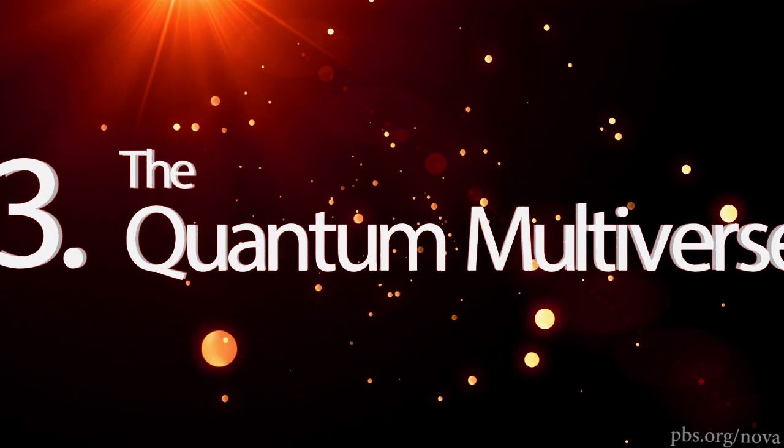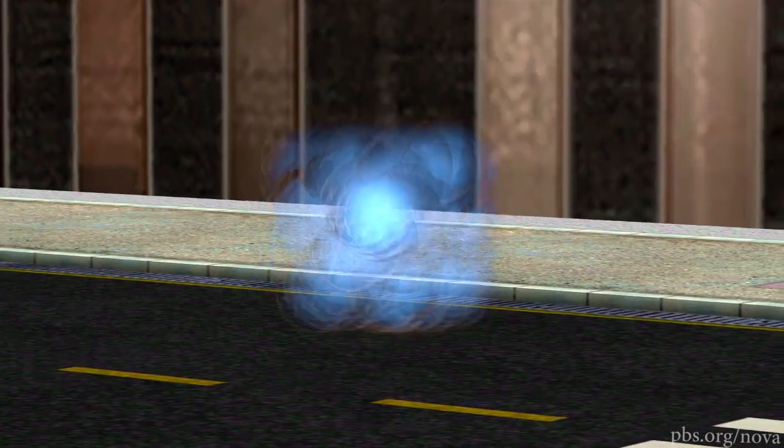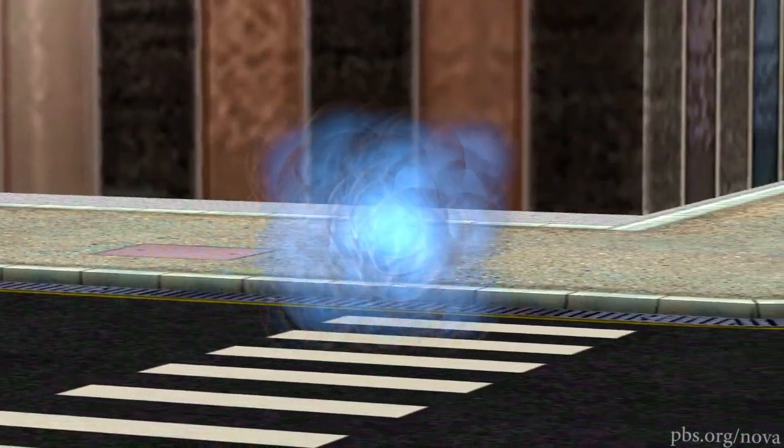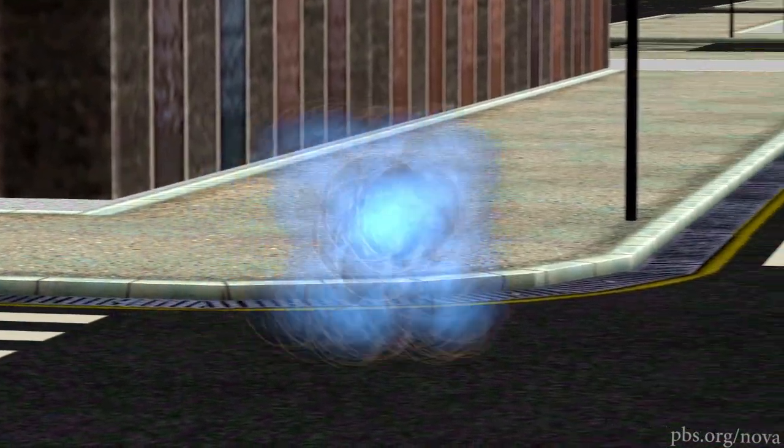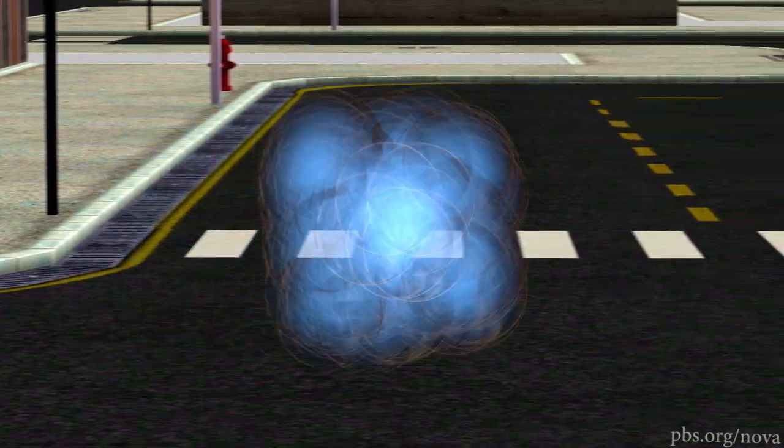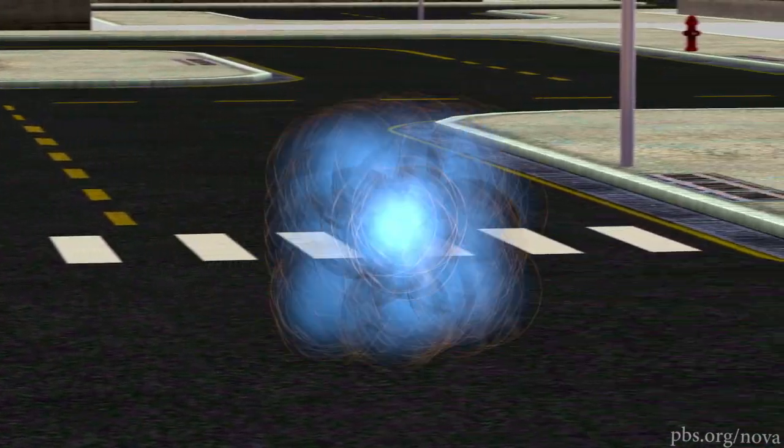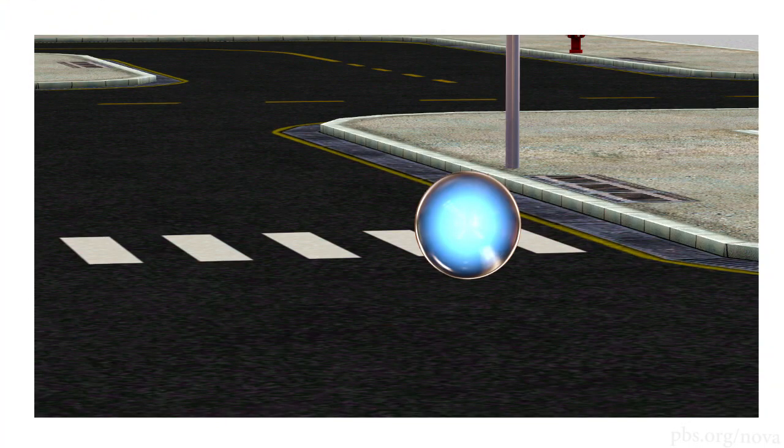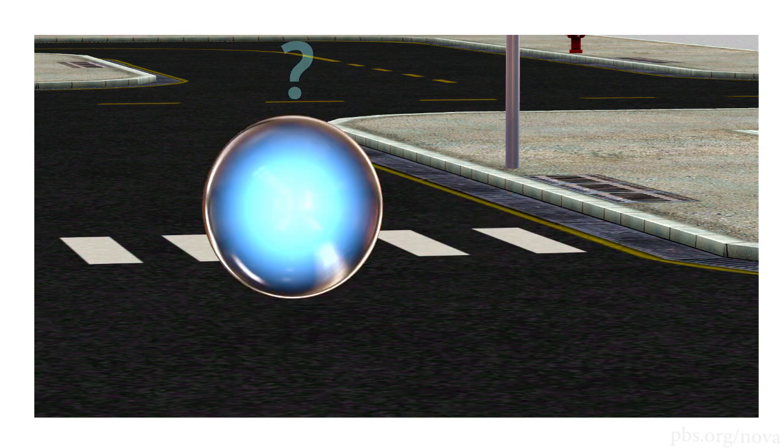The quantum multiverse. When things get really small, they get really weird. Quantum mechanics rules the behavior of small particles. Like this electron. As it moves along, where exactly is it? Quantum mechanics would say that it could be any number of places. But take a picture. It's right there. But how did it decide where to go when you took the picture?